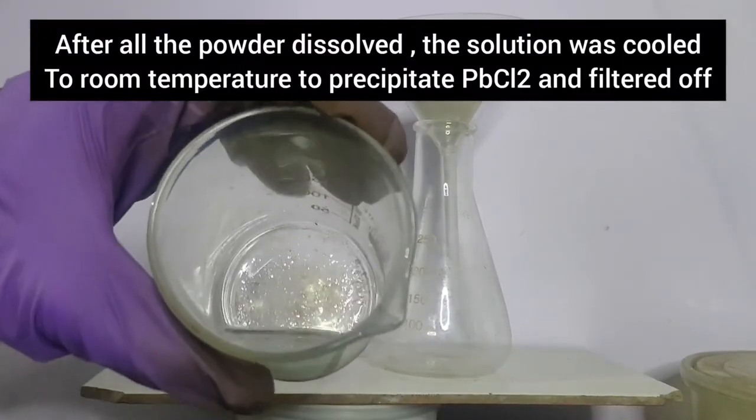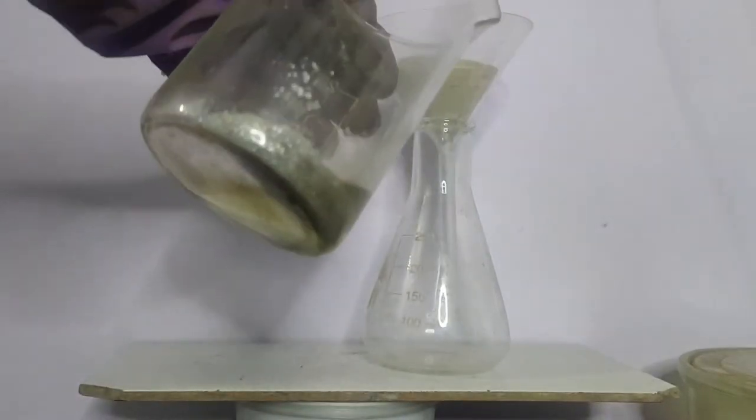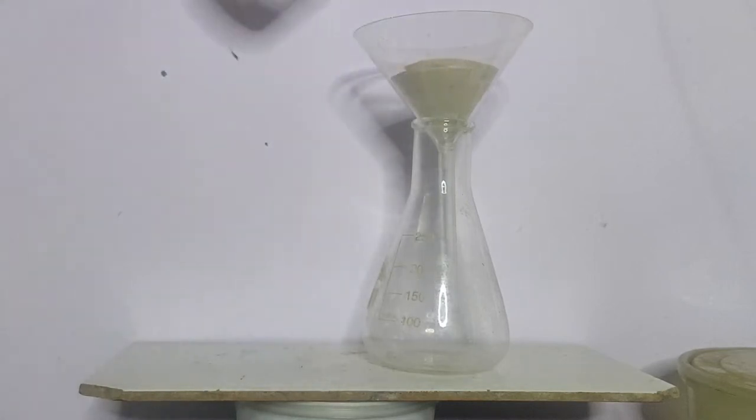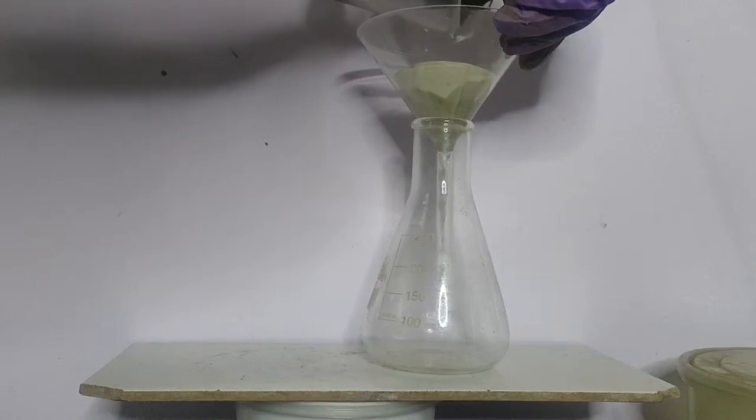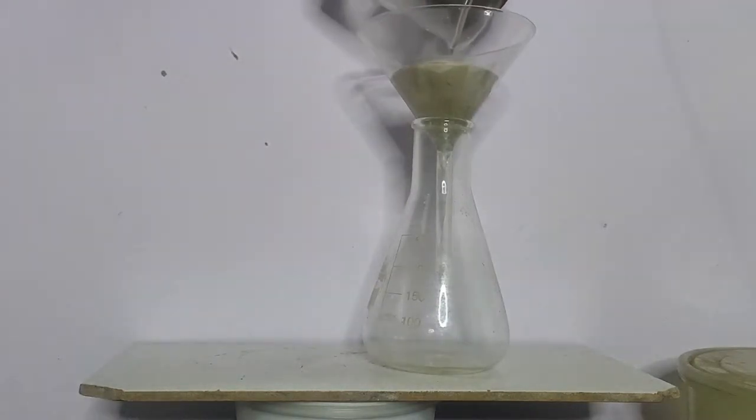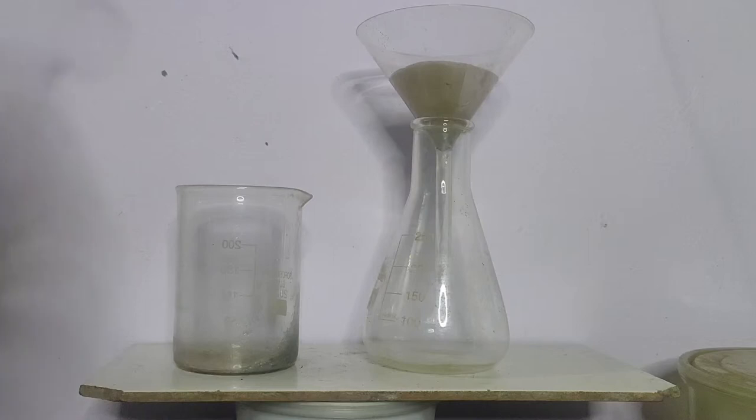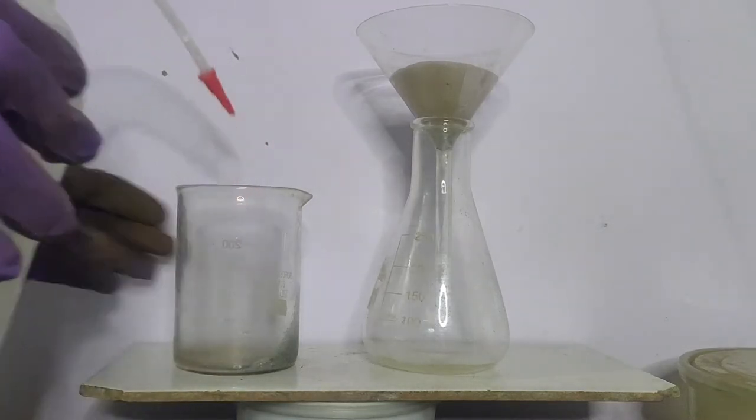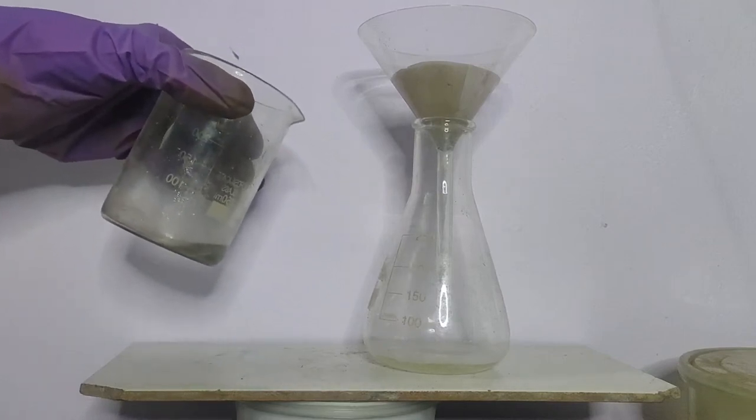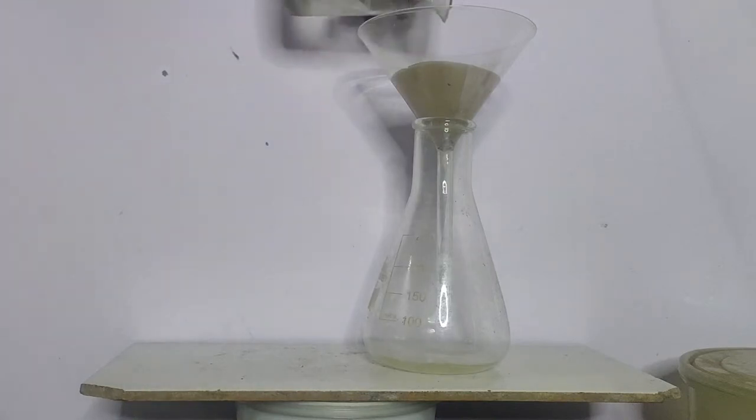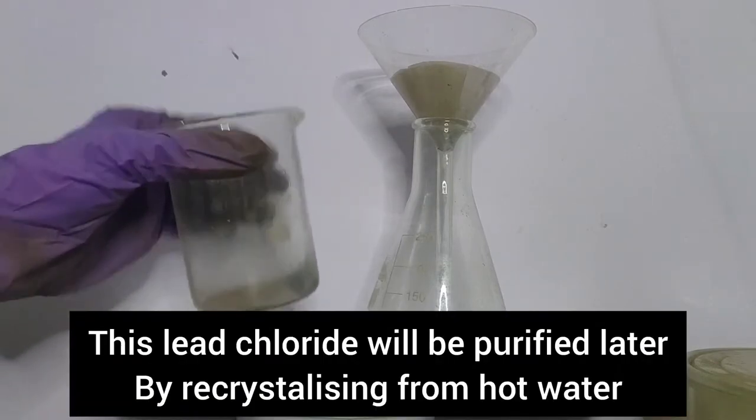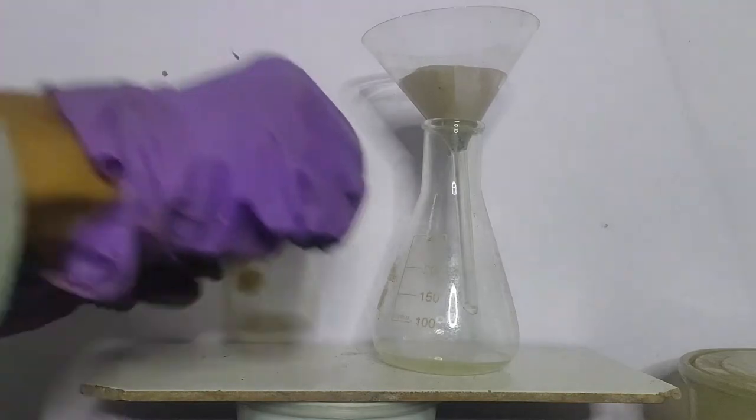So now, when after all the powder was dissolved, the solution was cooled and the lead chloride crystals, which were formed, were filtered off. I washed the lead chloride with some distilled water. This lead chloride will be purified by recrystallizing from hot water.